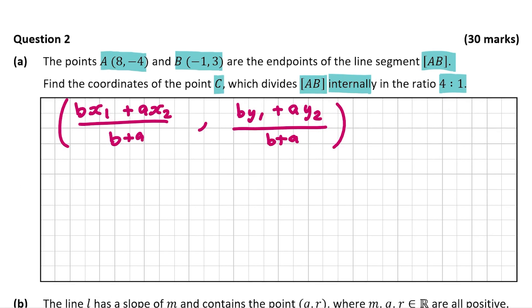First of all, I'm going to label my points: A is X1 and Y1, and B is X2 and Y2. A and B in the ratio are 4 and 1, so A is 4 and B is 1. Let's fill this out now to find the point C which divides the line segment internally in that ratio.